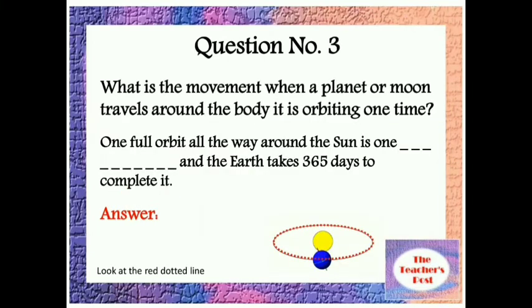Question number three: What is the movement when a planet or moon travels around the body it is orbiting one time? One full orbit all the way around the Sun is one blank, and the Earth takes 365 days to complete it.